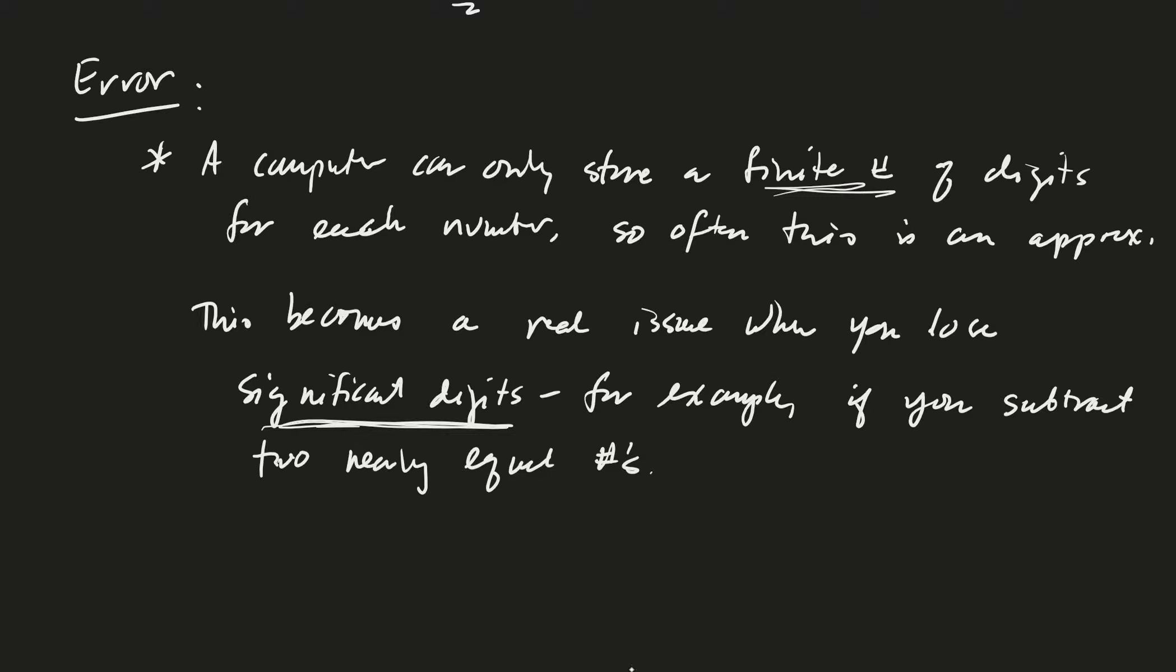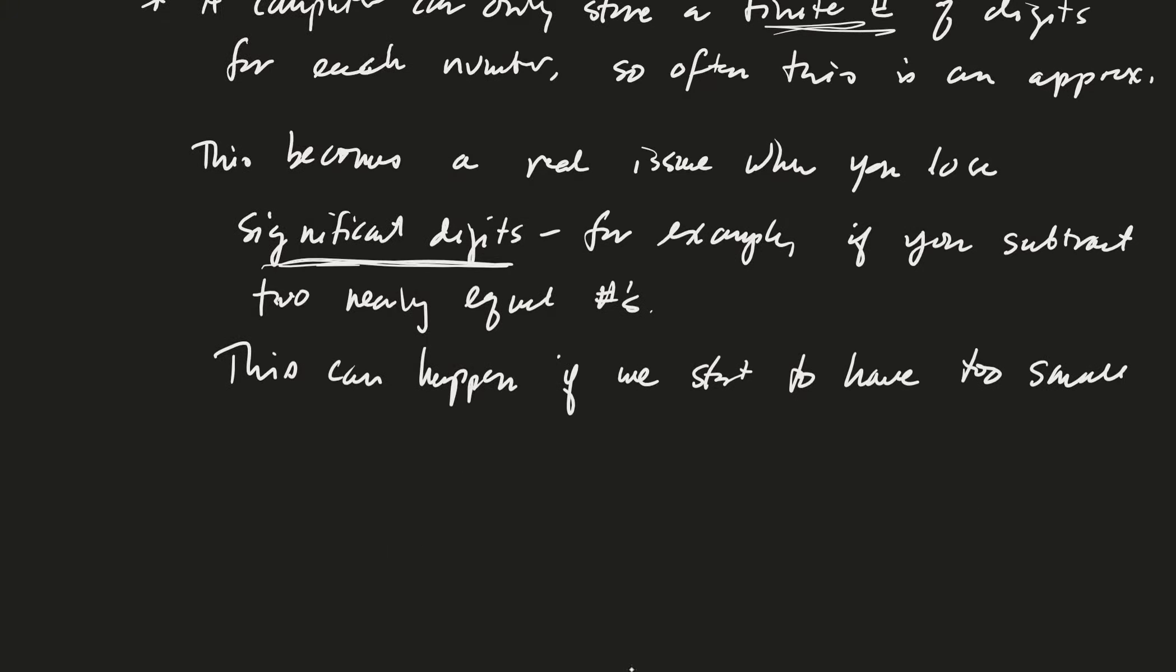If you do that often enough, you rack up big numerical error. Where would this happen for us? This can happen if we have too small of a step size h. If h is too small, it won't have significant digits anymore, and you'll run into trouble.